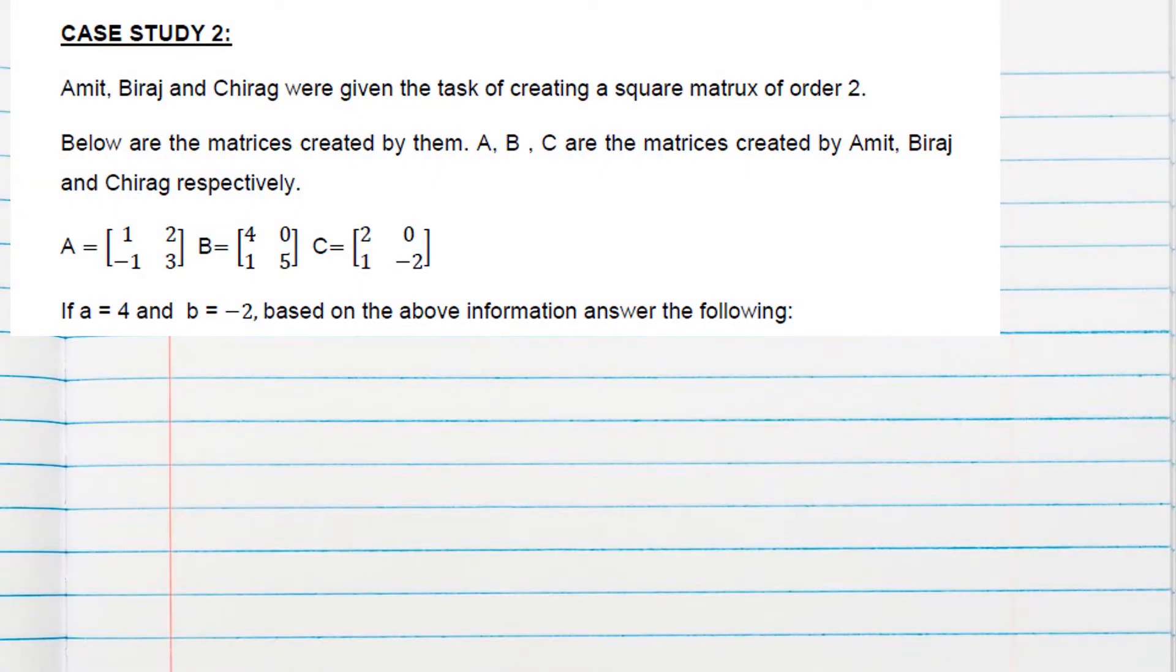Hello students, I am here with another case study from the matrices chapter. Let's get started with the question. Amit, Biraj, and Chirag were given the task of creating a square matrix of order 2. Below are the matrices created by them: A, B, and C. If a=4 and b=-2, based on this information we have to answer some questions.